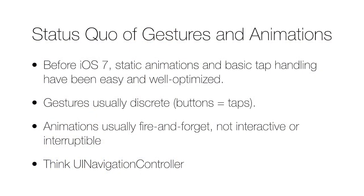If we think about before iOS 7, it was actually very uncommon to see dynamic animations or continuous gestures. By default, really static single taps, discrete gestures, and static animations were the standard. Animations were fire and forget — the APIs even encoded this and made it very easy to run a completion block after the animation is completely done. UI navigation controller is a great example: you typically tap a row or a button and it pushes something on screen, and during that interval the user really can't do anything else. That informed a lot of the other interactions built into the system.